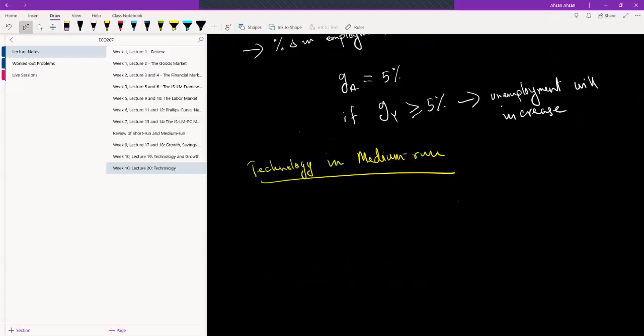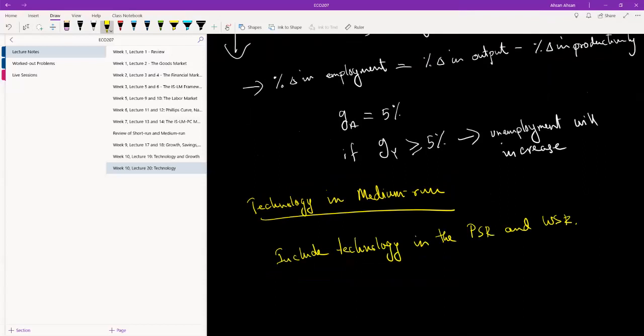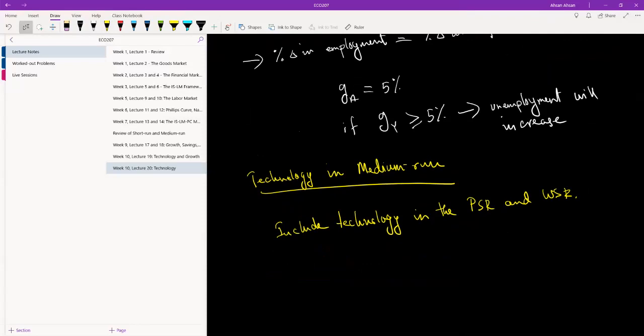So in the medium run, as I said, we are going to be using the price setting and the wage setting relations. So let me write those down. And of course, we are going to include technology in the price setting relation and the wage setting relation. That's how we combine technology with the medium run. So let's start with the price setting relation.